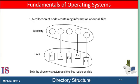The simplest directory structure is the single-level directory. All files are contained in the same directory, which is easy to support and understand. A single-level directory has significant limitations, though. When the number of files increases or when the file system has more than one user, problems arise. Since all files are in the same directory, they must have unique names. If two users call their data file test.text, then the unique name rule is violated.